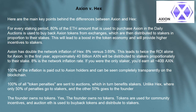Axion has double the network inflation of HEX, which leads to twice the ROI alone. In the first year, approximately 40 billion AXN will be distributed to stakers proportionately to their stake — 8% is the network inflation rate. If you were the only staker, you'd earn all 40 billion AXN. 100% of the inflation is paid out to Axion holders and can be seen completely transparently on the blockchain.